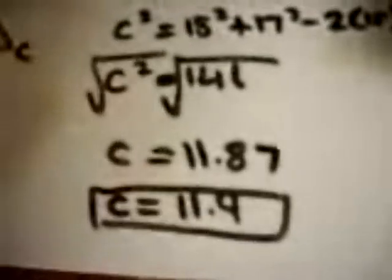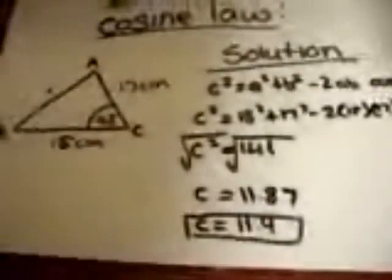By using the cosine law, we have found our unknown length C, which equals 11.9 centimeters.